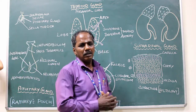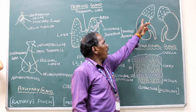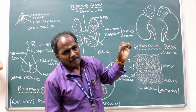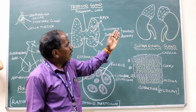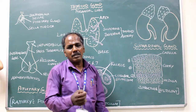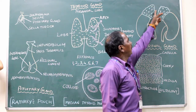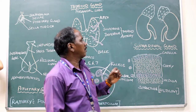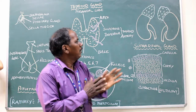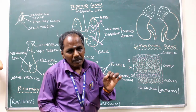Suprarenal gland — it is a paired endocrine gland situated one on the upper pole of each kidney. The right suprarenal gland is pyramidal in shape, whereas the left suprarenal gland is semilunar in shape. Each gland has an apex, a base, a medial border and three surfaces. It is covered by renal fascia, that is a capsule. Blood supply: it is supplied by superior, middle and inferior suprarenal arteries.